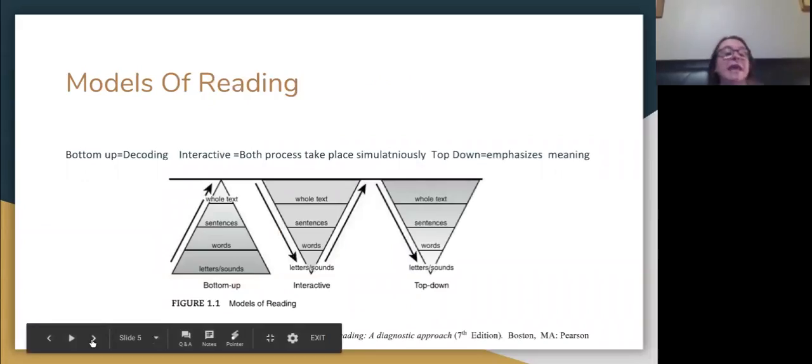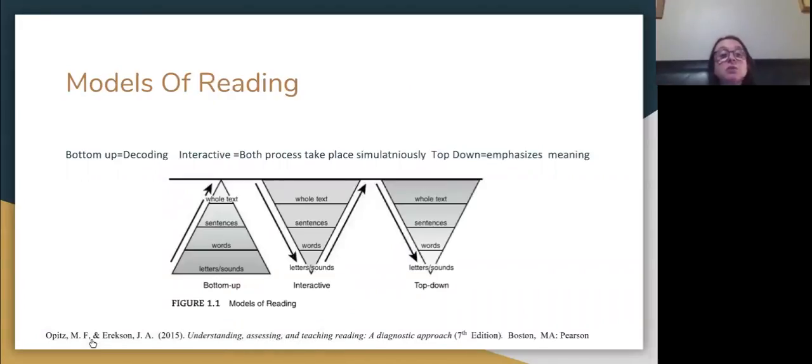In order to get an idea of what's going on, the first thing we really want to think about is how do children learn to read and how are we presenting learning to read. There's lots of ways that teachers will teach children to read. One way is bottom up, which is decoding. Starting with the letters and sounds, turning those letters and sounds into words, turning them into sentences, and then learning a whole text. The other way is top down, which is emphasizing meaning. Starting with the whole text and then breaking it down sentence by sentence into words, into sounds, really using that to find meaning.